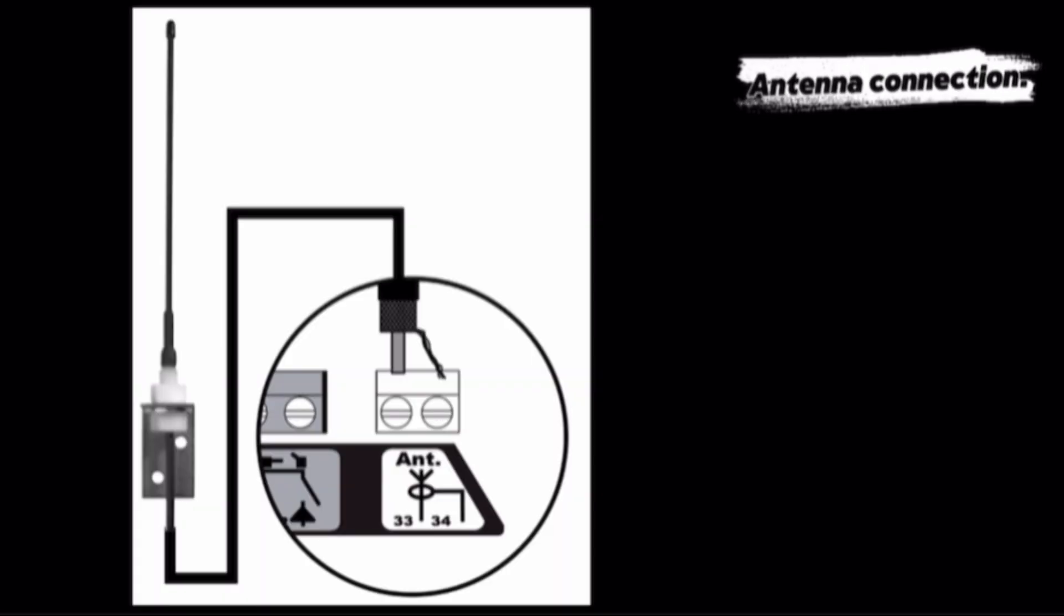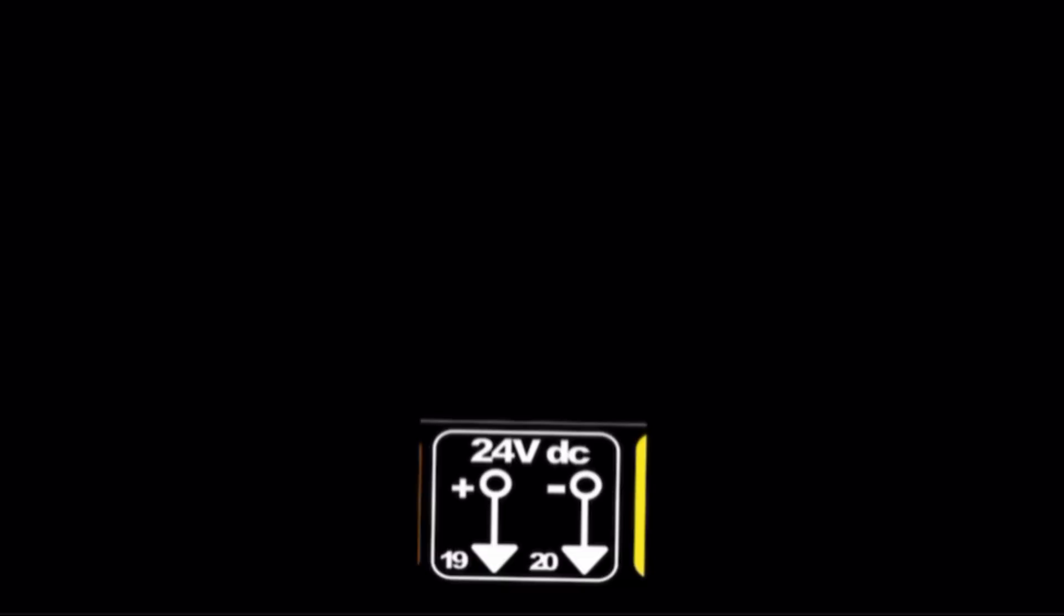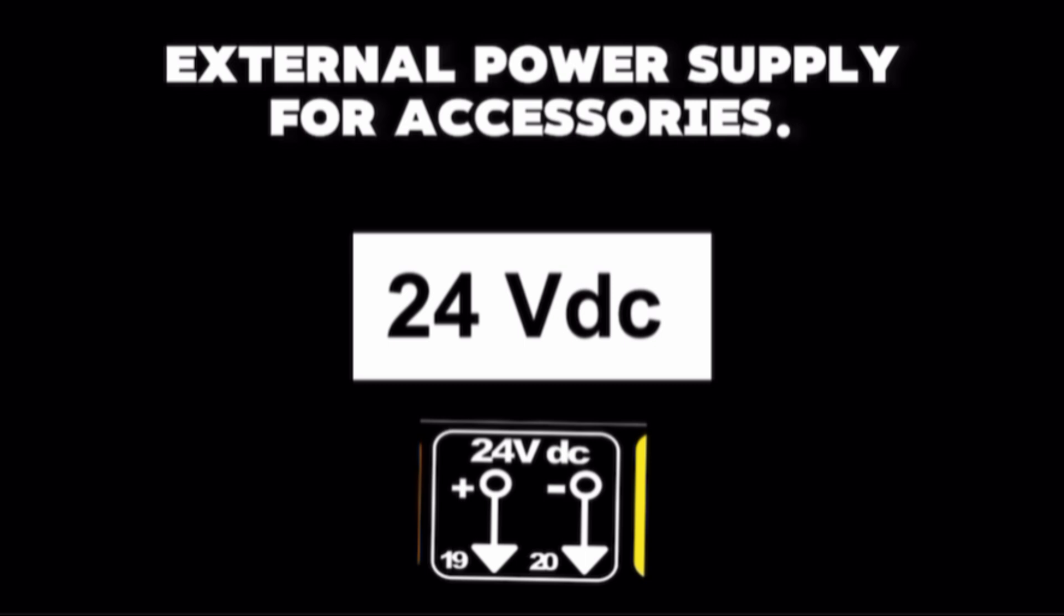Antenna connection. Terminal 33 is signal for main conductor wire. Terminal 34 is for braid conductor wire. Do not change the position of aerial. Terminals 19 and 18 are external power supply for accessories.